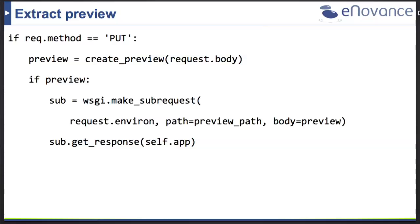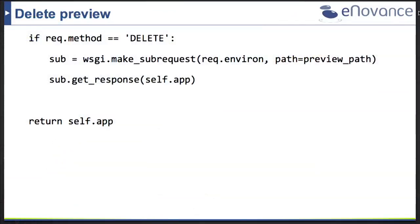To execute the sub-request, we call getResponse passing the current environment, the new preview path, and the preview as the body. For DELETE requests, we execute another sub-request with the modified preview path so both objects are deleted at the same time. This request will silently fail if there's no preview object, so it just continues without throwing an exception in your proxy server.